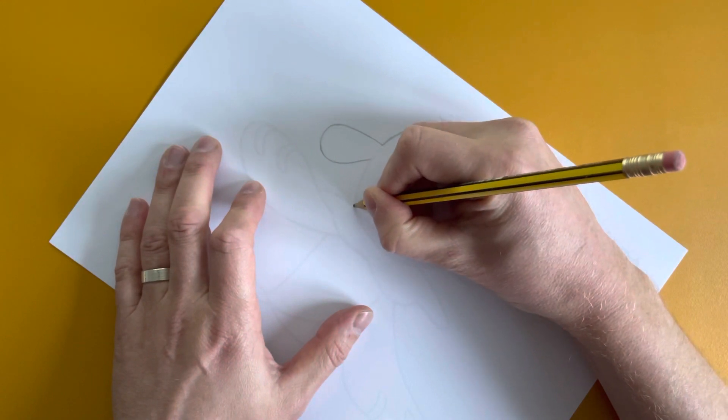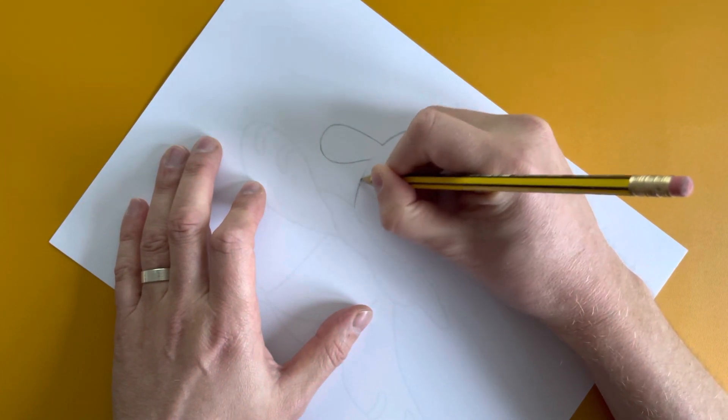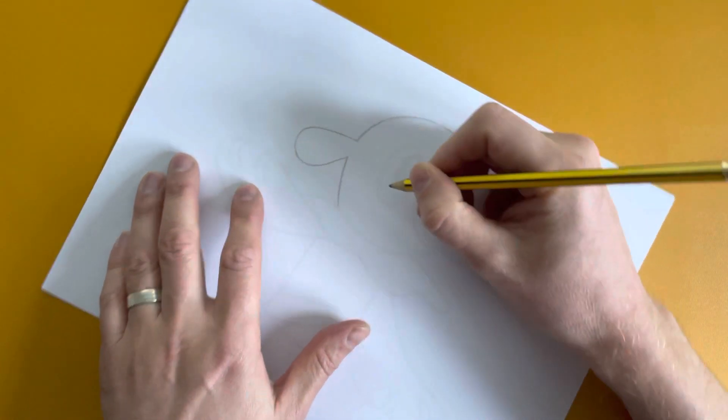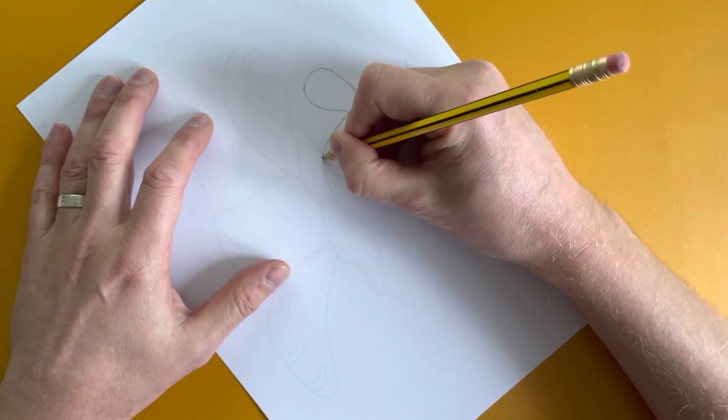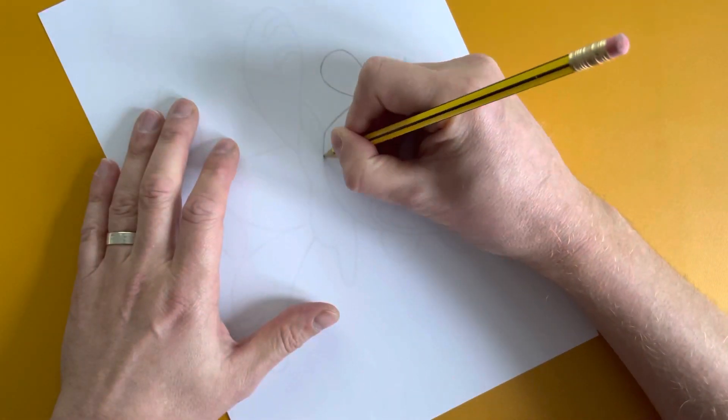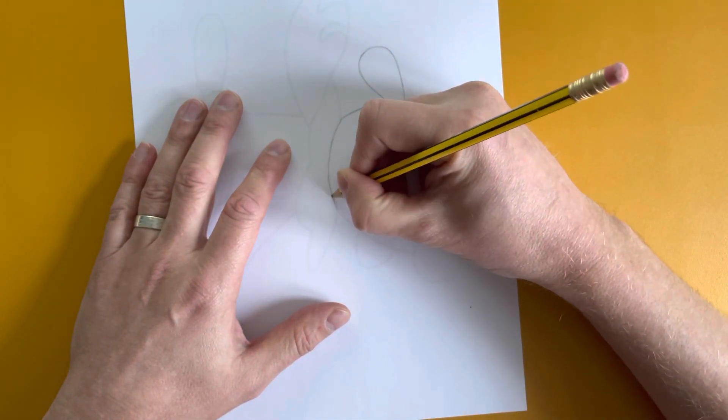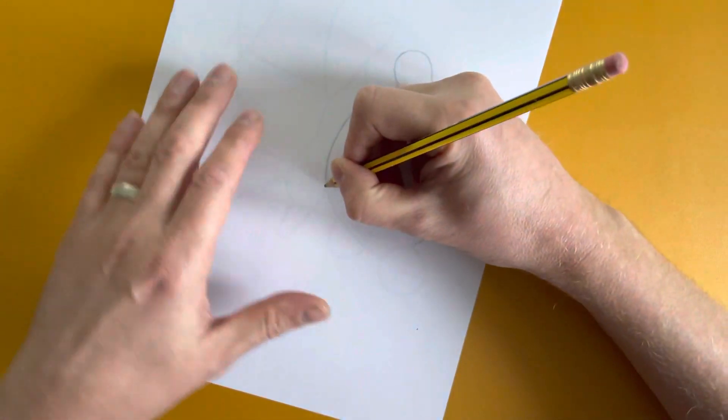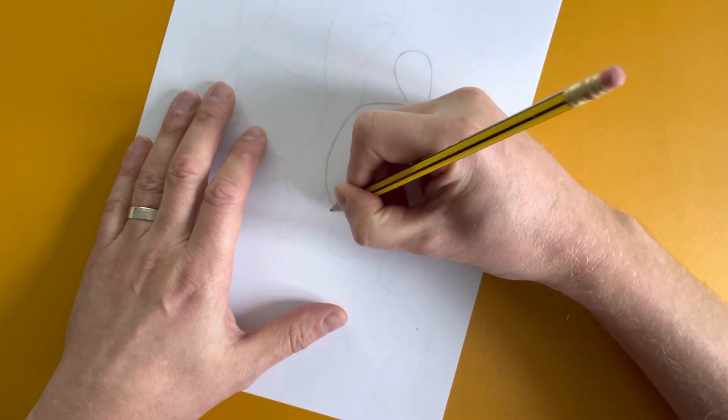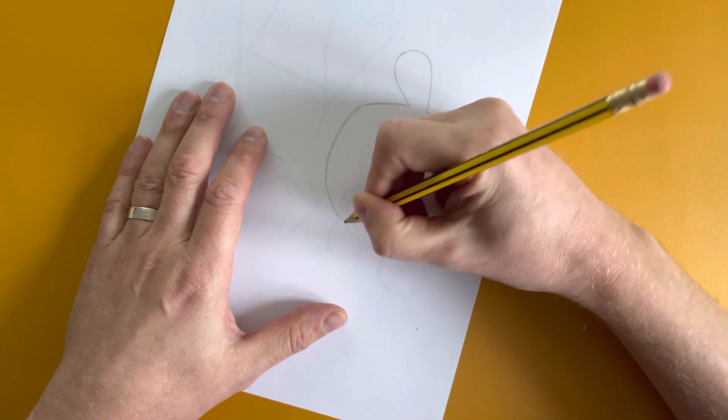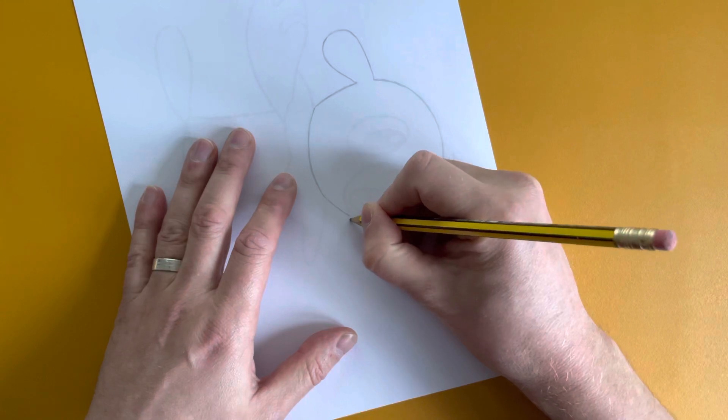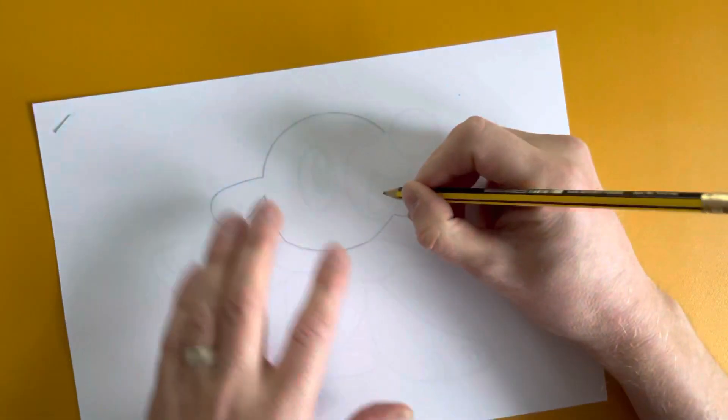And then back up, drawing up the rest of his head. And then across his neckline. Again, keep constantly moving the paper around so it's a comfortable position for your arm and wrist.